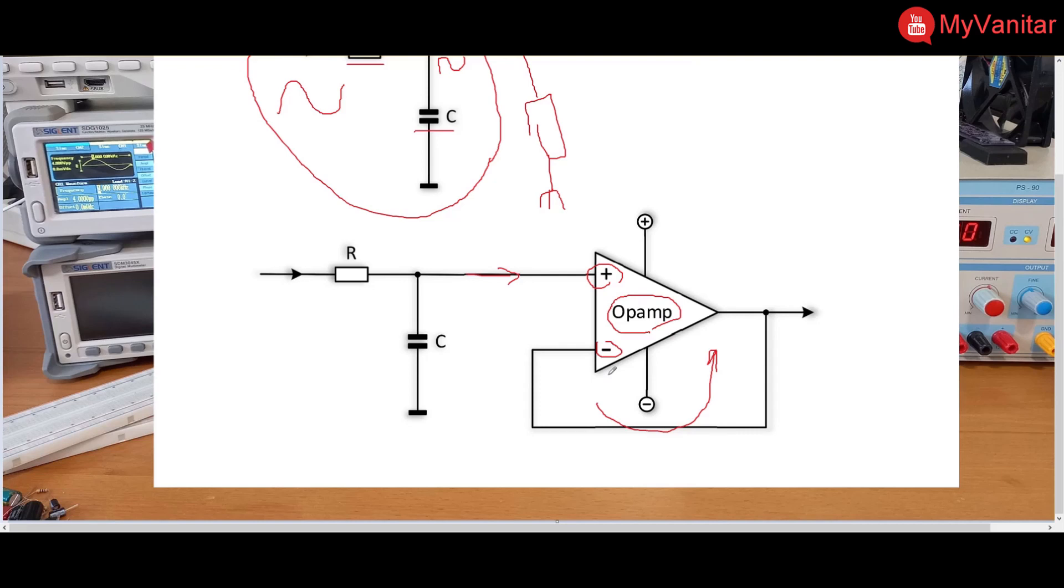Because the output impedance of the op-amp theoretically is zero—in practice it's very low—the problem of output impedance is solved.